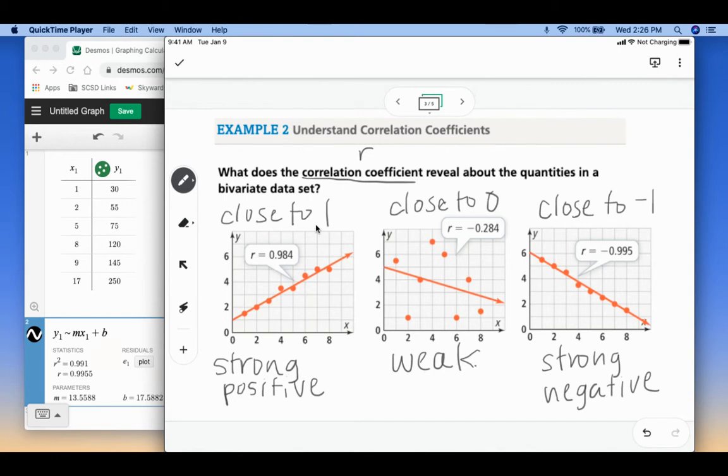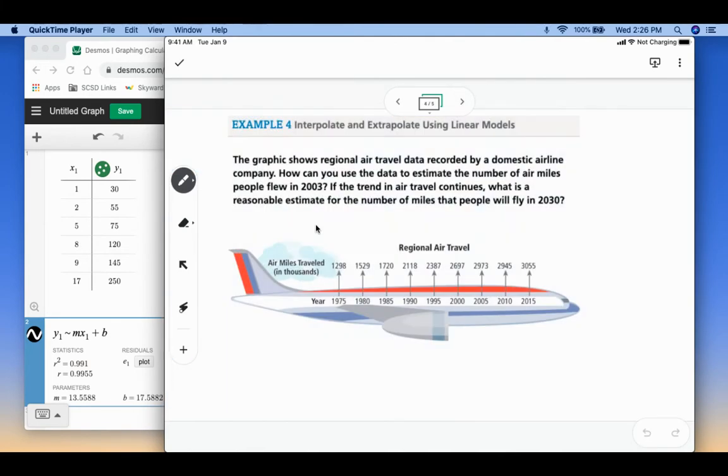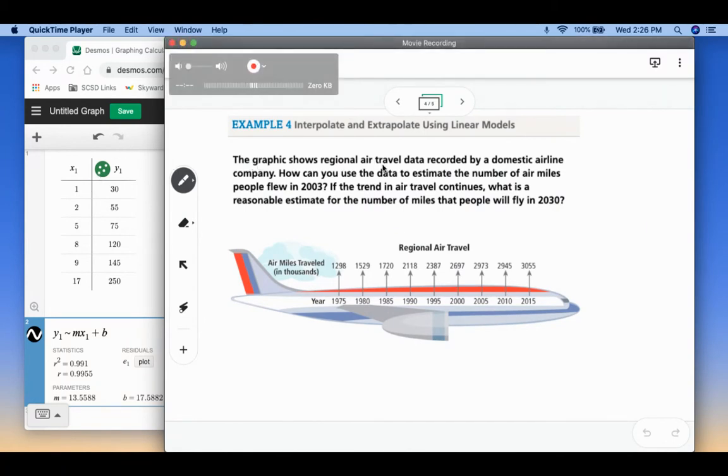Okay, so that is how we look at the r value to tell us how good of a correlation we have going on. Okay, so our last example here says the graphic shows regional air travel data recorded by domestic airline company. How can you use the data to estimate the number of air miles people flew in 2003? If the trend continues, what is a reasonable estimate for the number of miles people will fly in 2030?